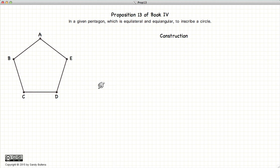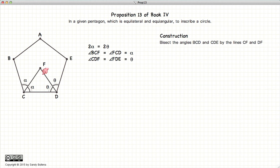So to do this, the first thing we are going to do is bisect the angle at C and D. And where these two lines intersect, we will label it F.